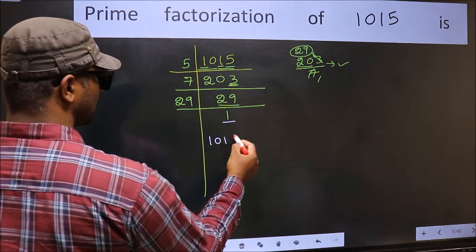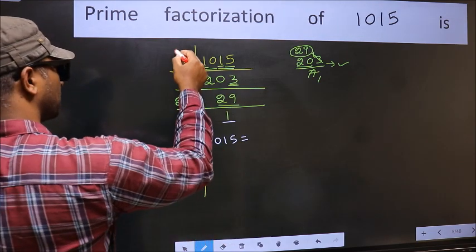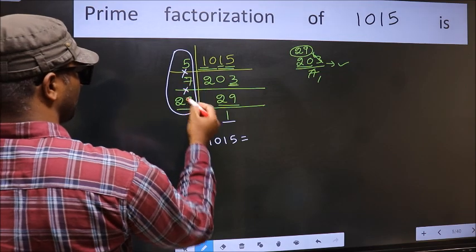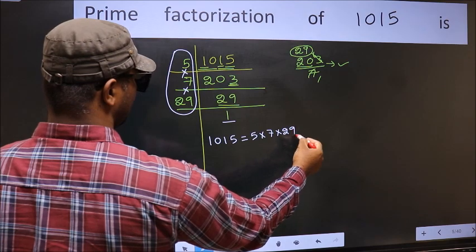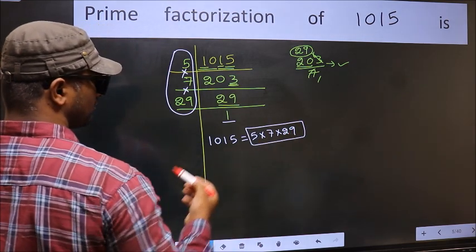So, the prime factorization of 1015 is the product of these numbers. That is 5 times 7 times 29. This is the prime factorization of 1015.